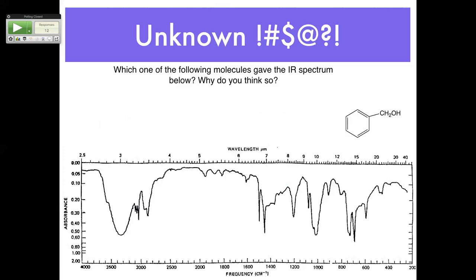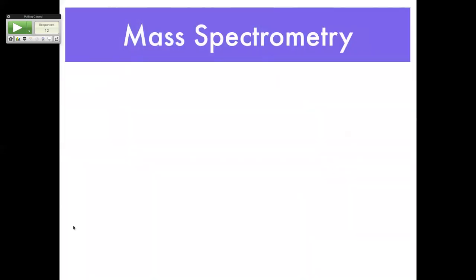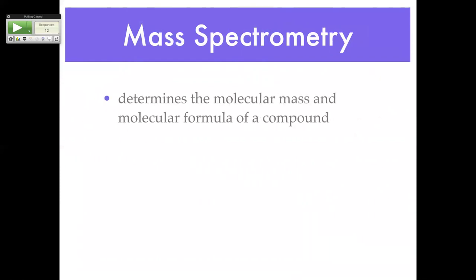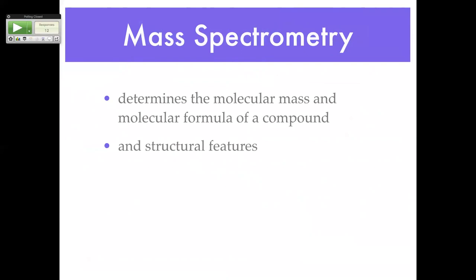How did your IRs come out when you ran them? We finally got the software all working. So now, mass spec — the real stuff. Mass spec determines the molecular mass and molecular formula of a compound. You're also going to get some structural features from mass spec, but you're really going to get your main functional group identification from IR.